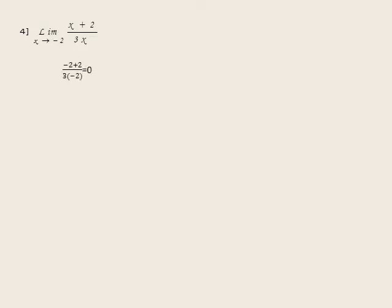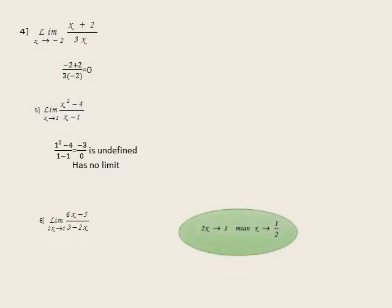Another example: limit as x approaches 1 of (x² minus 4) over (x minus 1). By substitution: 1² minus 4 over 1 minus 1 gives numerator equal to negative 3 and denominator equal to 0. Negative 3 over 0 — as stated — is undefined. Any number divided by 0 is undefined, so in this case we say the function has no limit.